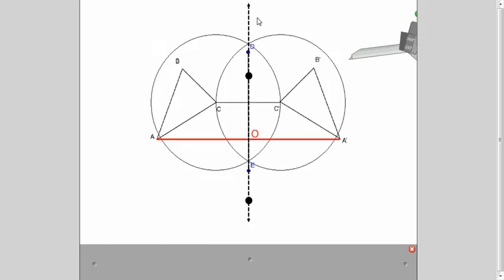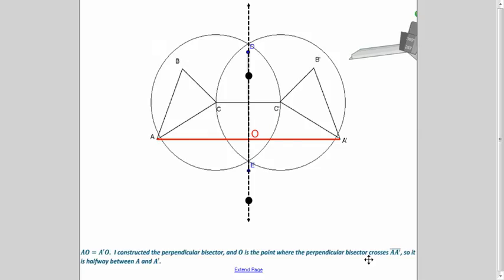Since it's a perpendicular bisector here, what do you know about A, O, and A prime, O? Well, since it's a bisector, it cuts it in half, so you know that those two measurements must be the same. So O is halfway in between them.